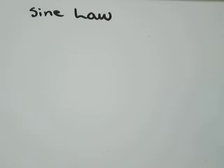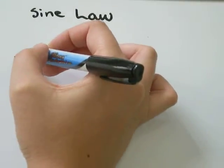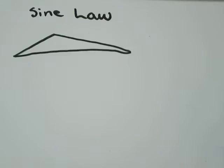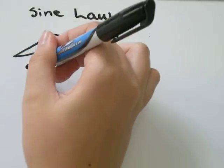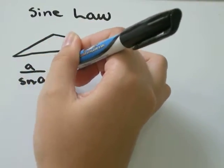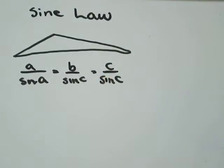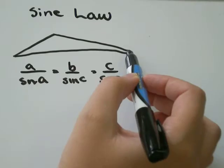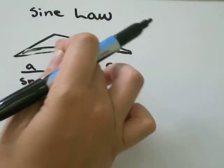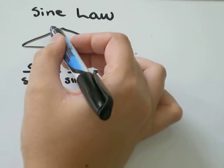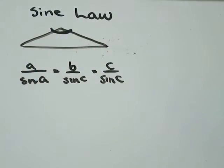In this video we're talking about the sine law, and the sine law is one that you use when you have a triangle that doesn't have a 90 degree angle in it. If you had a 90 degree angle, you could use regular trigonometry and Pythagorean theorem and all that good stuff. The sine law says that A over sine A equals B over sine B equals C over sine C. All that really says is that the length of any line segment on your triangle is directly related to the size of the angle that's opposite it.